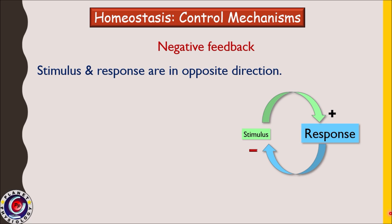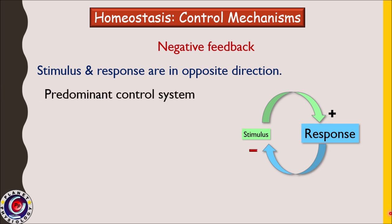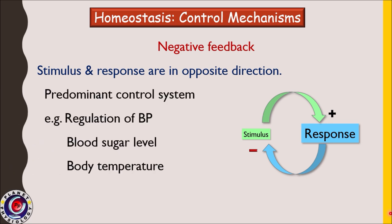In negative feedback mechanisms, the stimulus and response work in opposite directions. This type of control mechanism predominates in our body — about 99% of regulatory mechanisms are negative feedback. Examples include regulation of blood pressure, blood glucose level, and body temperature.